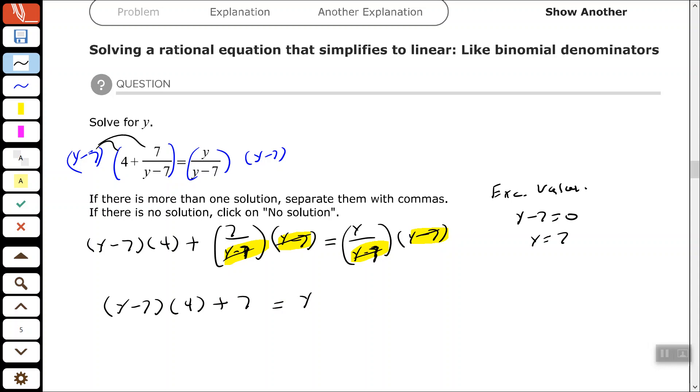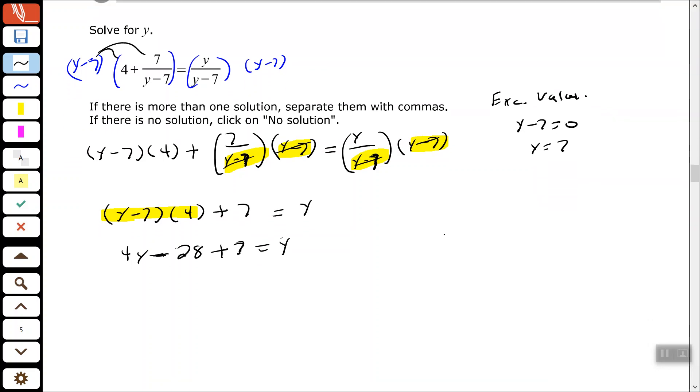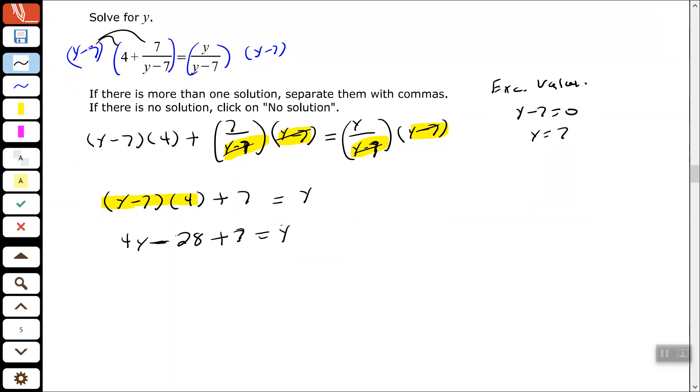Okay, so let's use distributive property here and clear the parentheses, multiplying both of those terms by 4, and then we have like terms, negative 28 plus 7 needs to be combined over there. So that gives us negative 21.